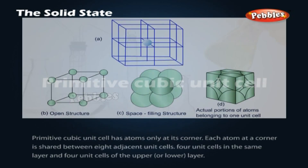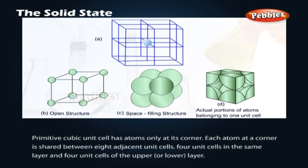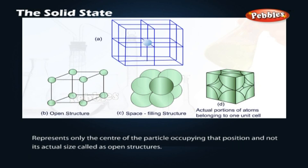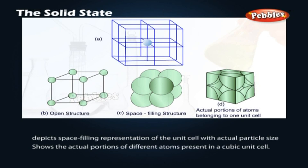Primitive cubic unit cell. A primitive cubic unit cell has atoms only at its corners. Each atom at a corner is shared between eight adjacent unit cells — four unit cells in the same layer and four unit cells of the upper layer. Therefore, only one-eighth of an atom or molecule actually belongs to a particular unit cell. A primitive cubic unit cell is depicted in three different ways: the open structure, the space-filling representation with actual particle sizes, and the unit cell with actual portions of atoms present.